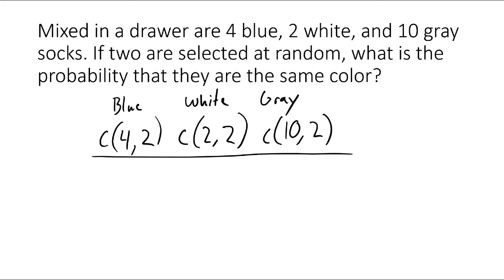That numerator is divided by the total number of elements in the sample space — the total number of ways to select two socks regardless of color. So our denominator is just how many socks there are total: four blue plus two white plus ten gray equals 16. That gives us C(16,2). The N and R must agree: 16 socks, we want to draw two. In the numerator, C(4,2) means four blue socks and we want two blue socks — the numbers inside each combination both refer to the same type of object.